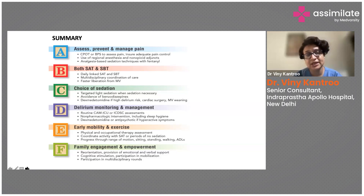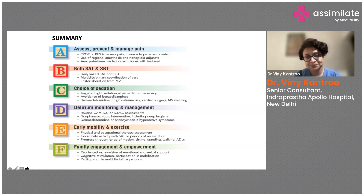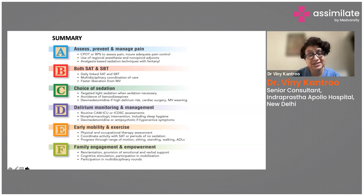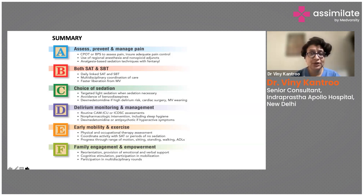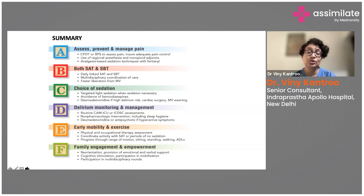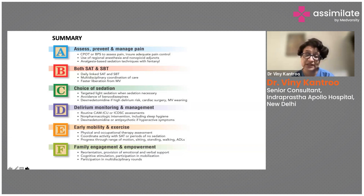'B' includes daily spontaneous breathing trials and multidisciplinary coordination of care — talking to physiotherapists and nursing staff about secretions, hemodynamic stability, patient mobility, and communication with staff. These factors help liberate patients from mechanical ventilation faster. 'C' refers to choice of sedation: targeted light sedation given only when necessary, and importantly, avoidance of benzodiazepines, which studies have shown are responsible for delirium in many patients with worse outcomes.